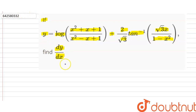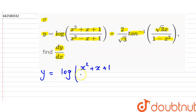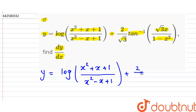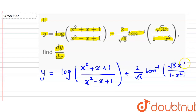What is the question here? This is y equals to log of (x² + x + 1) divided by (x² - x + 1), plus (2/√3) into tan inverse of (√3x) upon (1 - x²).